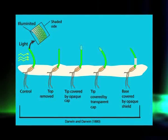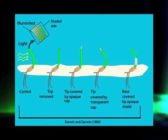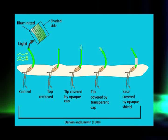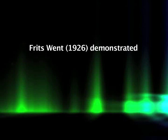Darwin also cut off the tip of the coleoptyle and exposed the rest to unidirectional light — curvature did not occur. This confirmed that the tip of the coleoptyle was the tissue responsible for perceiving the light, and it produced some signal which was transported to the lower part where the physiological response of bending occurred. The region where bending occurs is called the growth zone, located several millimeters below the tip.